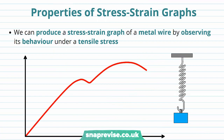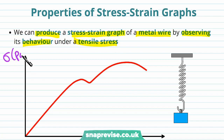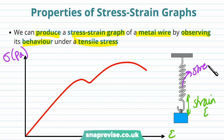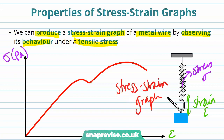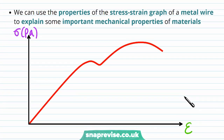Now that we understand why a stress strain graph is useful and how to plot one, we can look at the properties of a stress strain graph. We can produce a stress strain graph of a metal wire by observing its behaviour under a tensile stress. The stress strain graph puts stress on the y-axis in pascals and strain on the x-axis, and it actually tells us certain properties about the material.